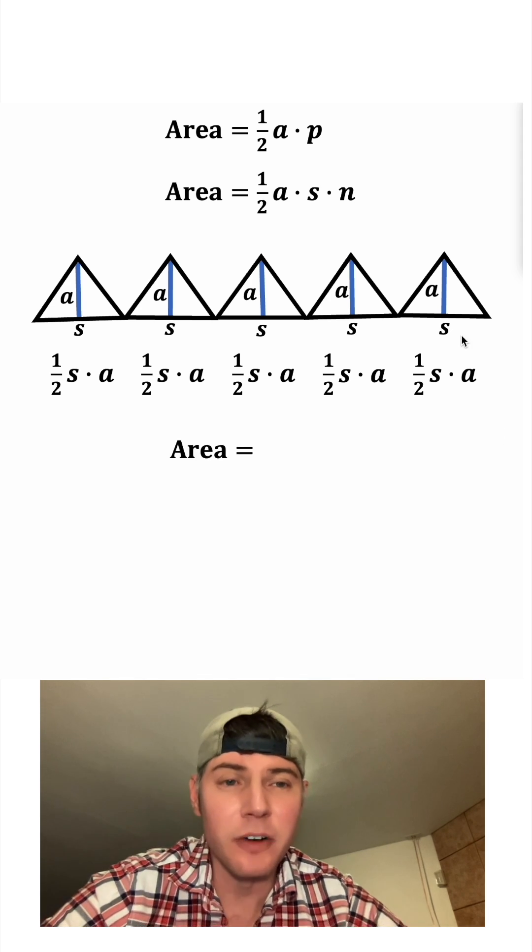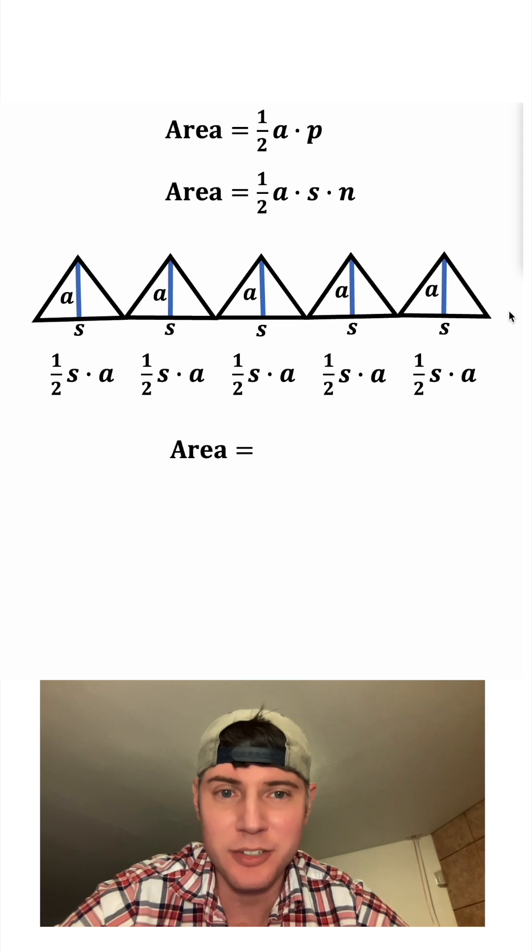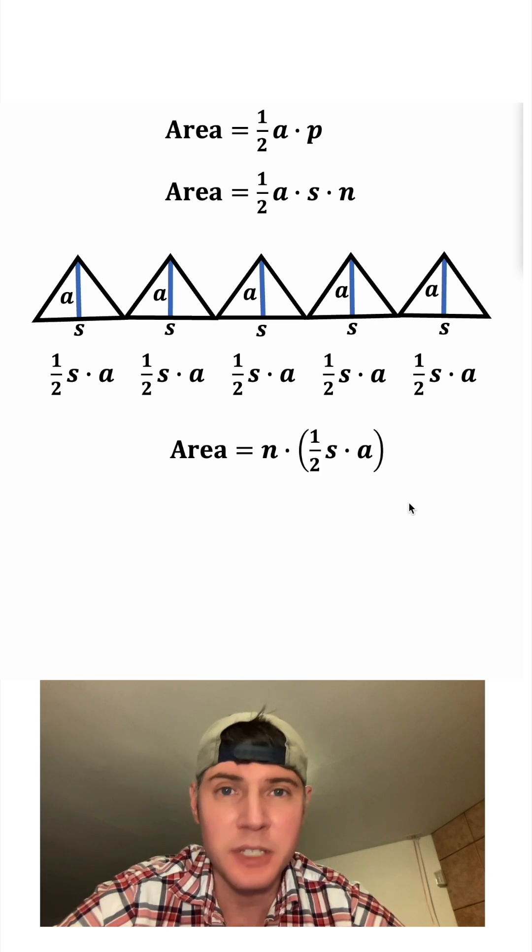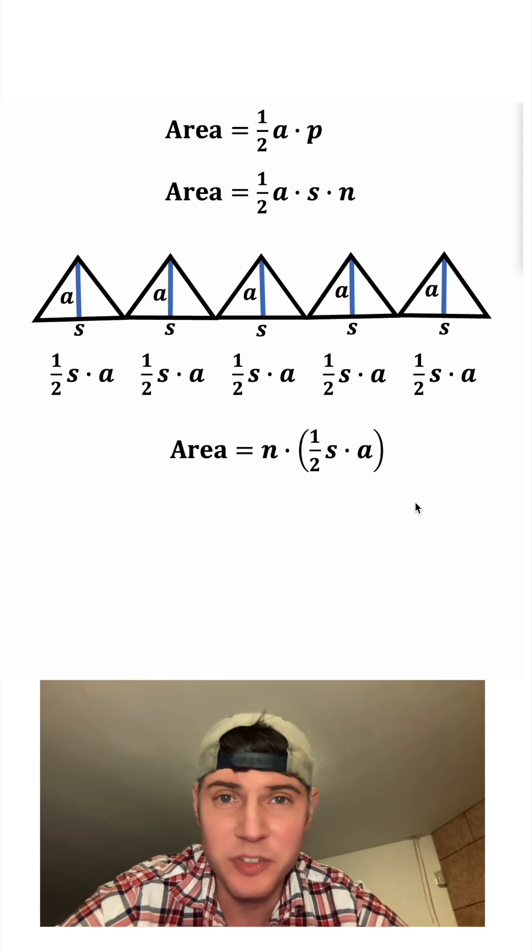So now to find the area of our polygon, we can just add up these N triangles. Or in other words, we can just do N times each triangle, where N is the number of sides of the polygon.